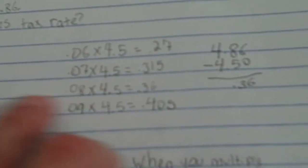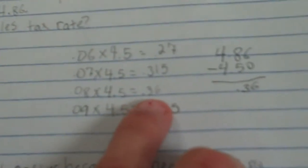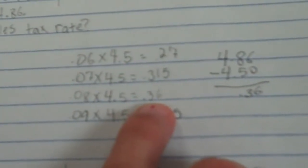And so when I times it by 6%, I got 27 cents, which wouldn't be right because 4.86 minus 4.50 is 36 cents. So that would be how much sales tax costs.